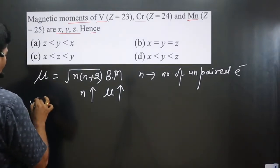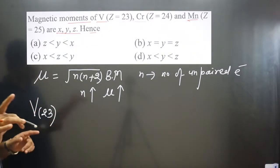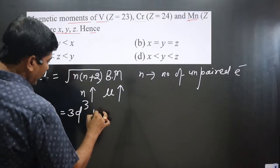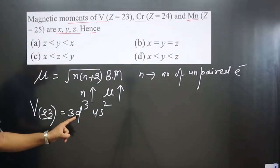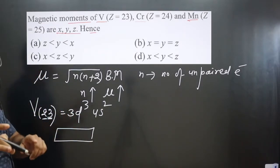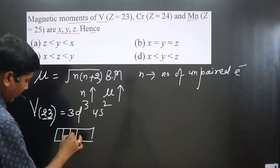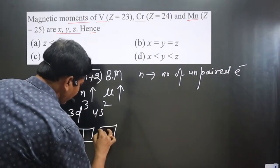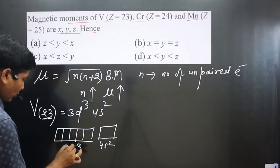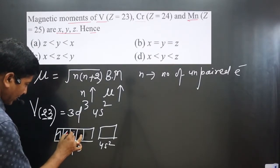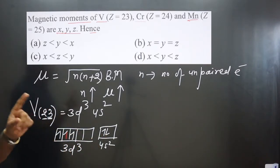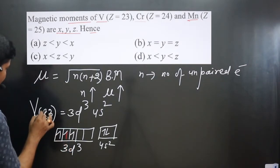For vanadium (atomic number 23), we write the outermost electronic configuration: 3d³ 4s². In the d subshell, there are 5 orbitals. With 3d³, we place one electron in each of three orbitals following Hund's rule. The 4s² orbital is completely filled. So vanadium has 3 unpaired electrons.